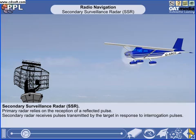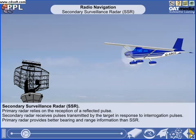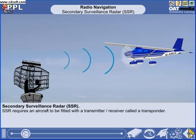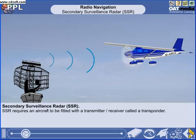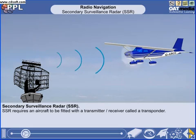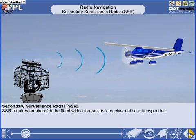Primary radars also require higher transmitter power outputs for the two-way journey of the single pulses. Secondary surveillance radar requires an aircraft to be fitted with a transmitter-receiver called a transponder. The pilot sets a four-figure code allocated by air traffic control, and the transponder transmits information automatically in pulse-coded form when interrogated by the ground station. The transmissions are therefore only one way, from transmitter to receiver.